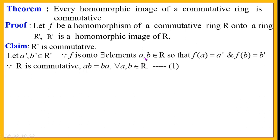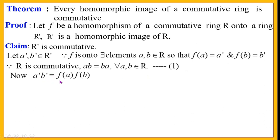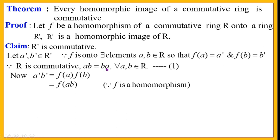Since R is commutative, a, b in R implies ab = ba — call this equation (1). Now we have to show that a' · b' = b' · a'. Consider a'b'. Since a' = f(a) and b' = f(b), we have a'b' = f(a) · f(b). Since f is a homomorphism, f(a) · f(b) = f(ab). By equation (1), ab = ba, so f(ab) = f(ba). Since f is a homomorphism, f(ba) = f(b) · f(a).